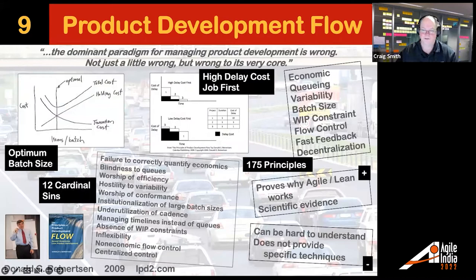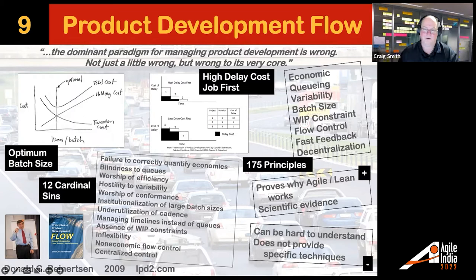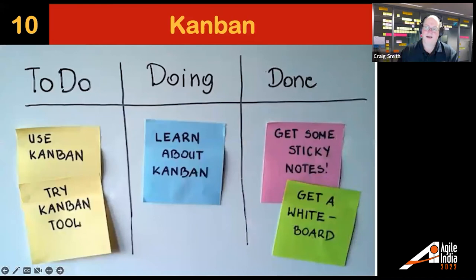In more modern times, Don Reinertsen's Principles of Product Development Flow has 175 principles. Essentially, he proves why Agile Lean works — why we should break things down, use cost of delay, apply work in progress limits, and control batch size. So if you're looking for evidence or mathematics for agility, look at Don's book. Ironically, it has a waterfall on the cover, and it's a little hard to read. Don told me himself: 'My book is like fine cheese — you can only take it in small doses.'